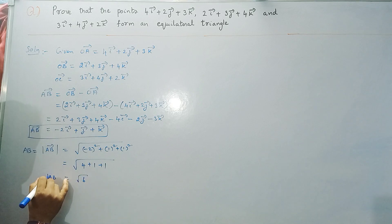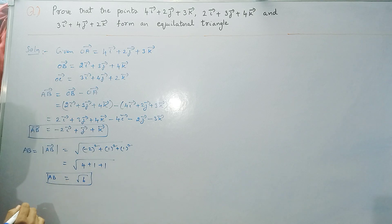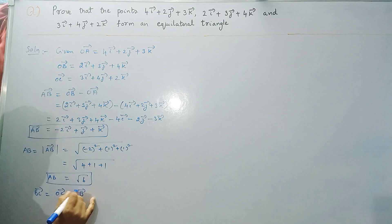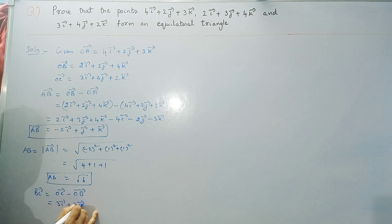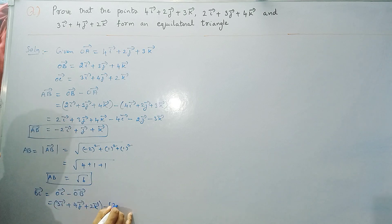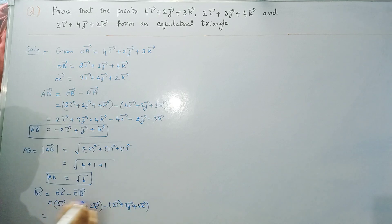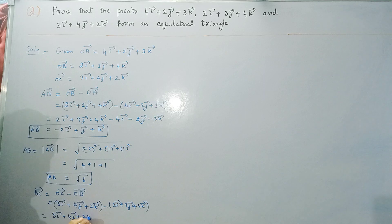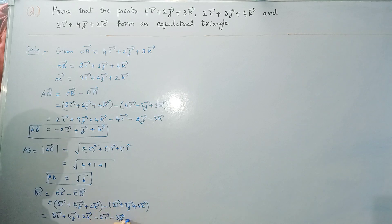Next we find BC vector. BC = OC − OB = (3i + 4j + 2k) − (2i + 3j + 4k). Taking minus inside: 3i + 4j + 2k − 2i − 3j − 4k. So BC = i + j − 2k.